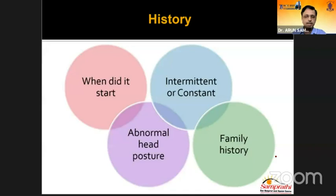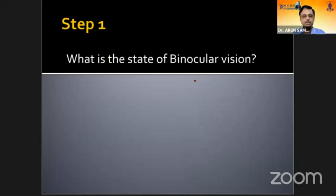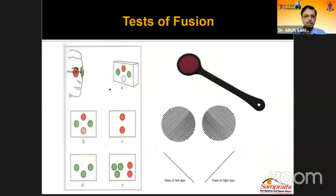History is very important. The time of onset of the squint matters — if the squint starts early and is constant, it has a higher risk of developing amblyopia and loss of binocular vision. Try to get maximum information before you start the actual examination, because once you put the torch and examine the child, it may become uncooperative. First, check binocular vision, because once you dissociate the eyes, you may not get accurate BSV measurements.